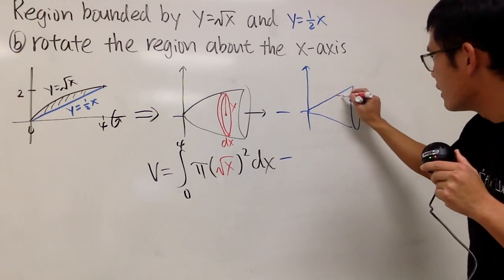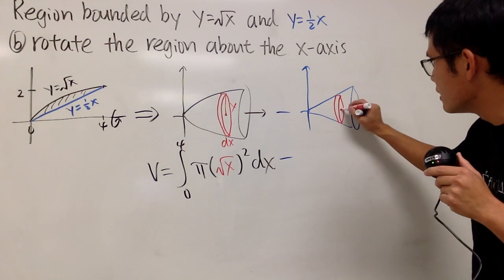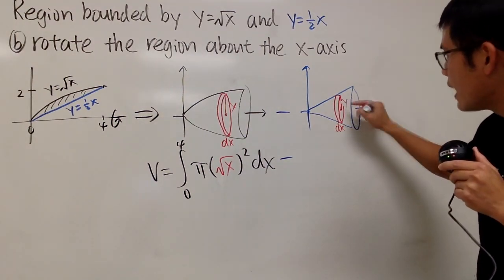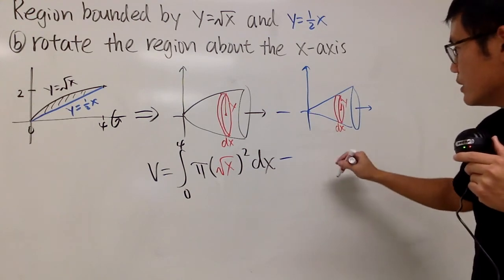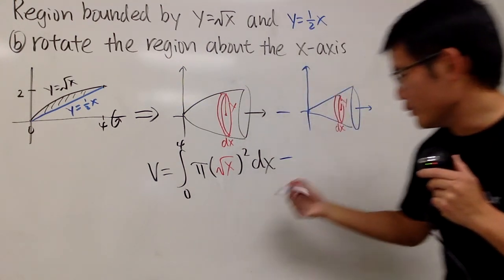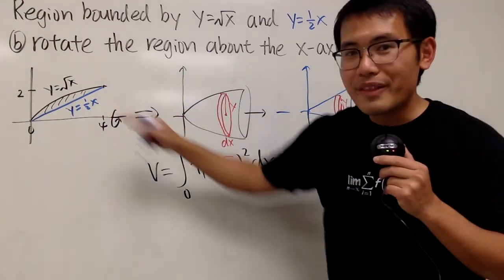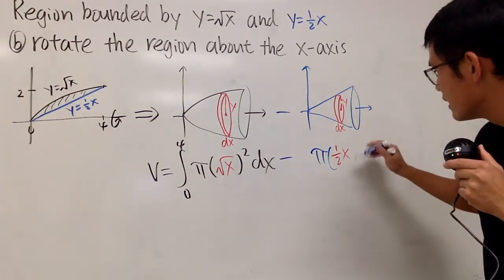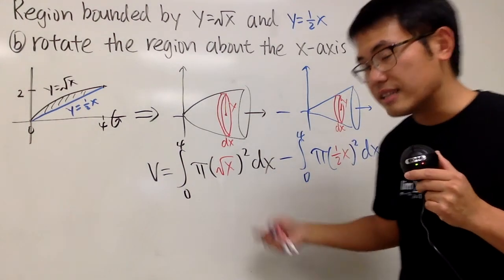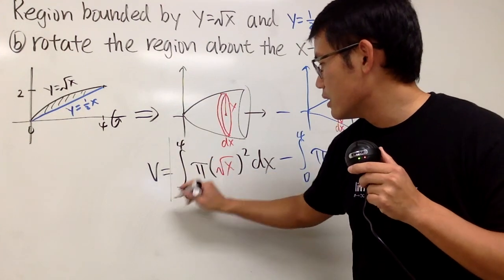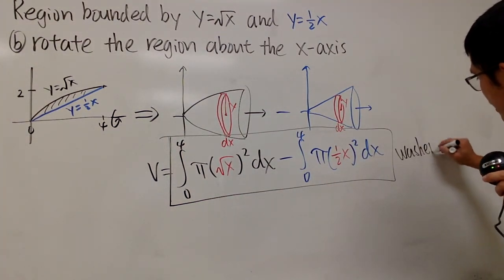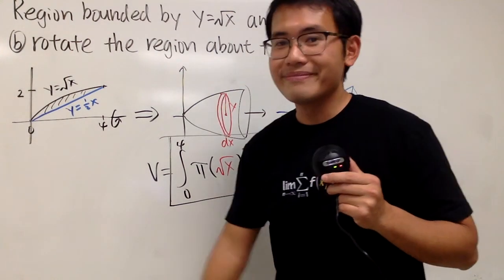Anyway, right here, do the same thing. I will just draw a disk — pretty much the same thing. The thickness is still dx, and this right here is our y, but the y is one-half x. So this is not so bad. π r squared, and the r is — blue — π r is y, which is one-half x. And then you square that, dx that, integrate that from 0 to 4. You can put this inside of that, but as I said earlier, writing it down separately will be more clear. So this is the so-called washer method — just like a washing machine, there's a hole in the middle.